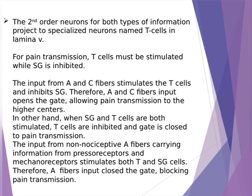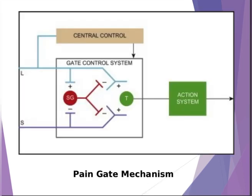The second order neuron for both types of information projects to specialized neurons named T cells in lamina 5. For pain transmission to occur, T cells must be stimulated where SG cells are inhibited. The input from A-delta and C fibers stimulates the T cells and inhibits the SG cells. Therefore, A-delta and C fibers input opens the gate, allowing pain transmission to the higher center. On the other hand, when the SG and T cells are both stimulated, the T cells are inhibited and the gate is closed to pain transmission. The input from the non-nociceptive A-beta fibers carrying information from proprioceptors and mechanoreceptors stimulates both the T cells and the SG cells. Therefore, A-beta fibers input closes the gate, blocking pain transmission.